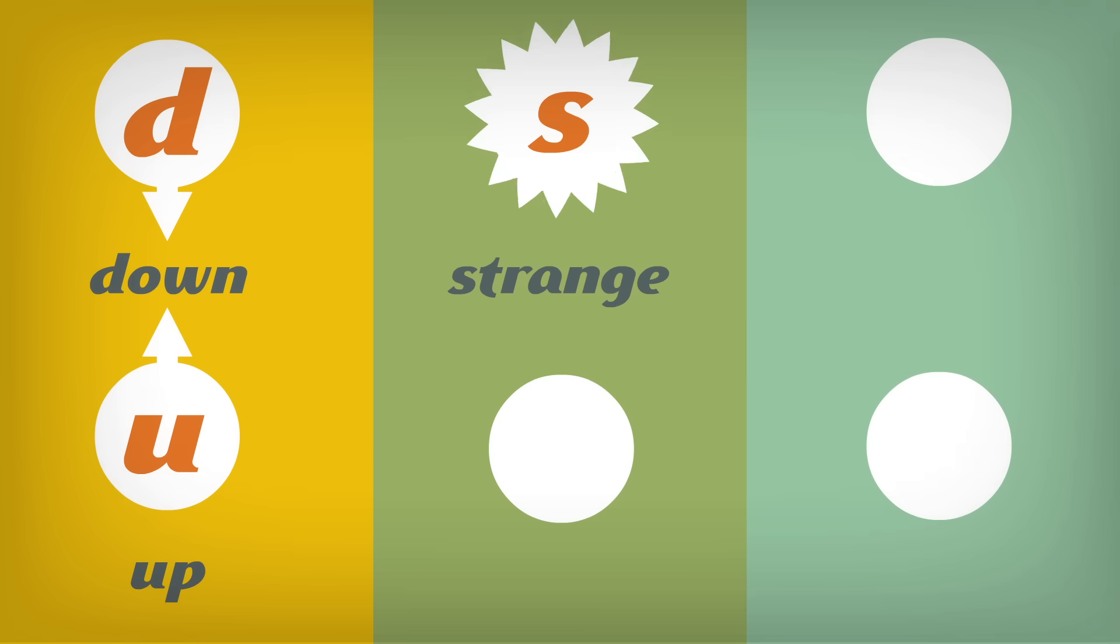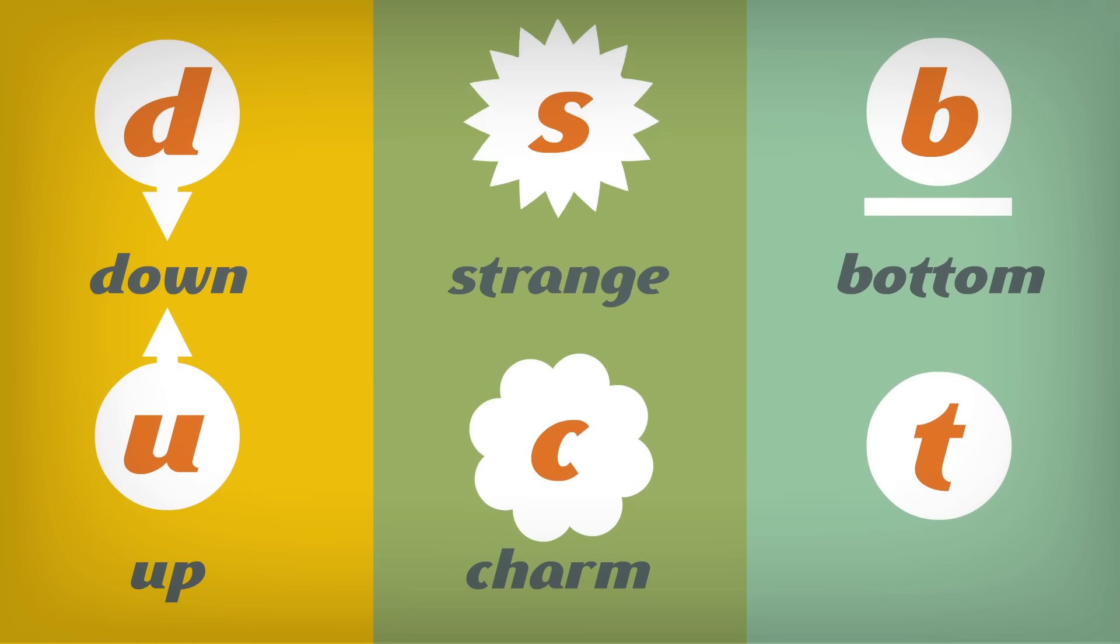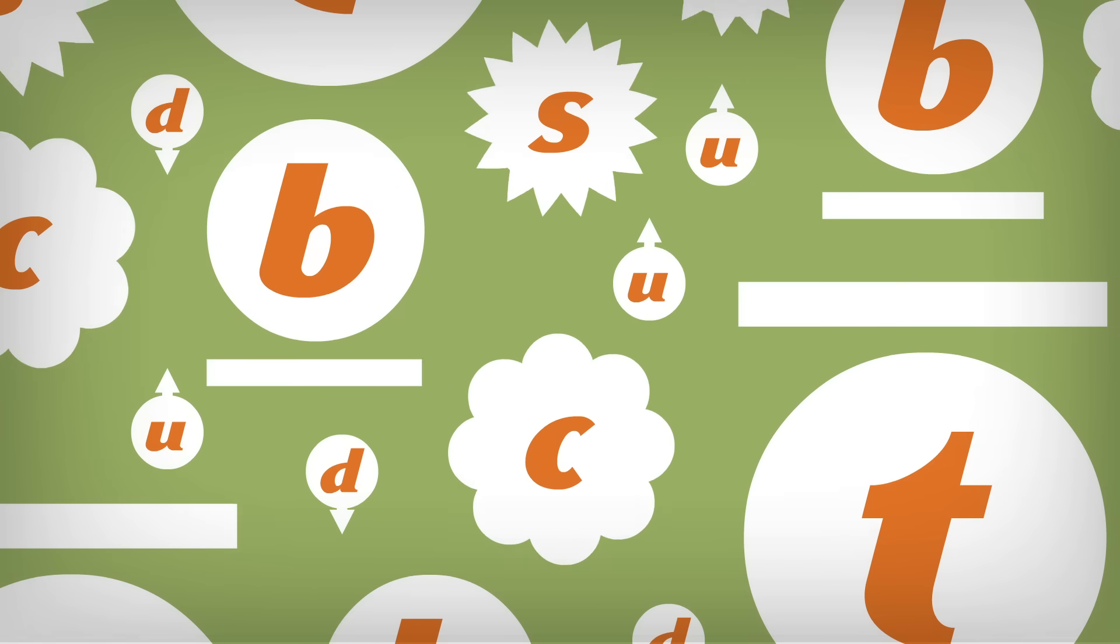However, high-energy experiments reveal that there are actually six quarks: down and up, strange and charm, and bottom and top. And they come in a wide range of masses.